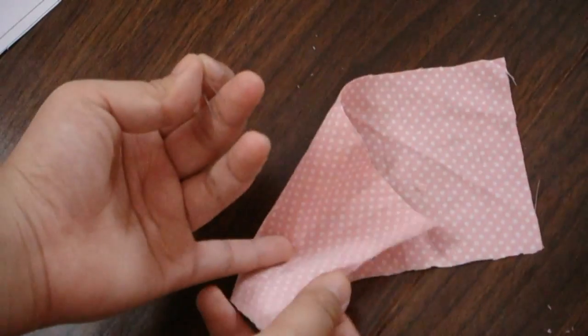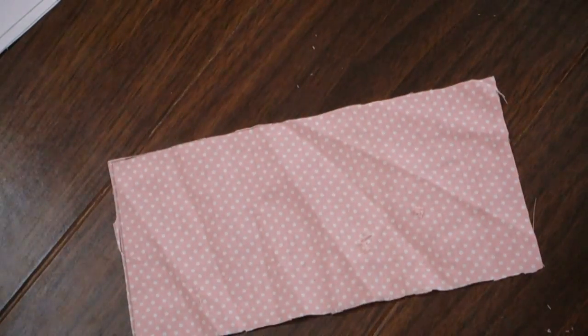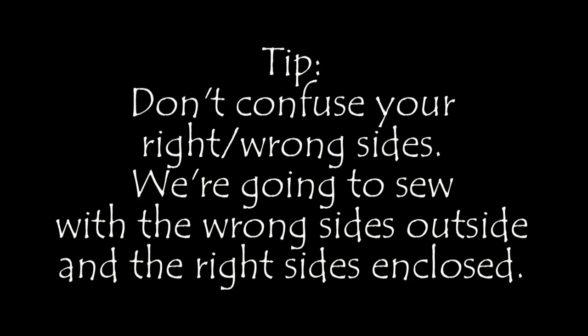The right side of your fabric is going to be on the inside and the wrong sides will be on the outside. We're going to sew the wrong sides together and then flip the pillow inside out.